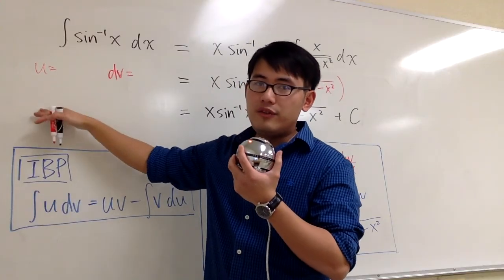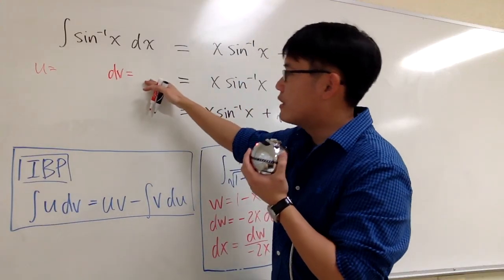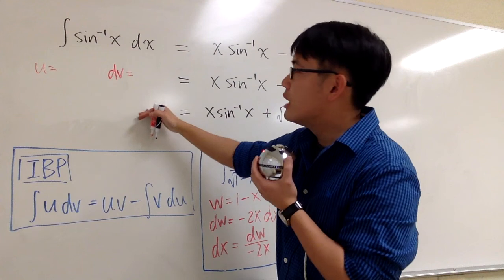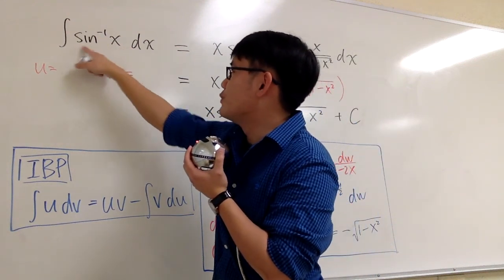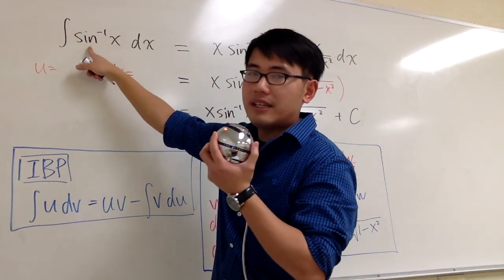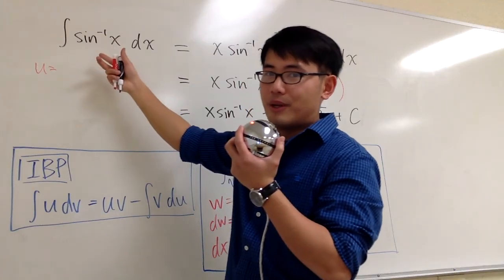For the u part, you have to differentiate that. For the dv part, you have to integrate that. And we only have one choice right here, one thing right here. This is the inverse sine x, right? That's the function part that we have.